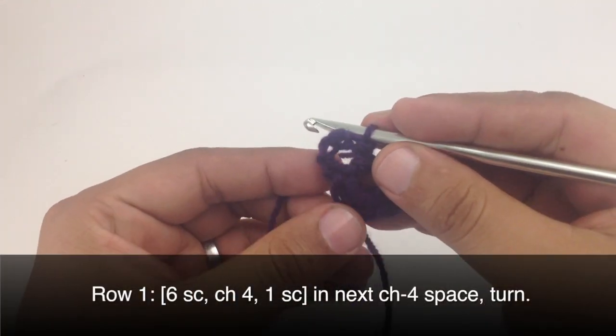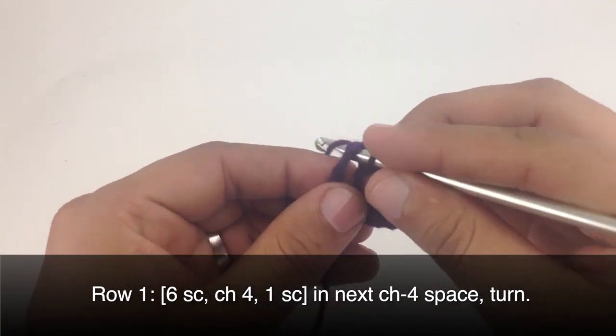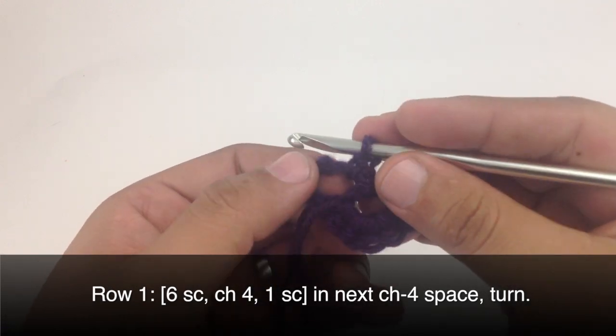Round 2. After we've turned our work, we are going to do 6 single crochets into the next chain 4 space. So that's the loop that we made there.